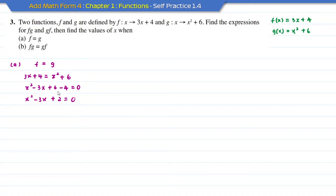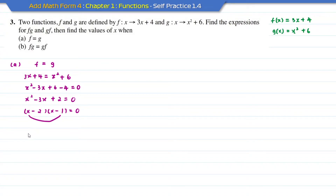In order to solve the quadratic equation, I need to do factorization. So I'm going to get (x)(x). This is a plus and this is a minus. In order to get 2, I need to multiply 2 times 1. This will give negative 1x and negative 2x, which when totaled equals minus 3x.